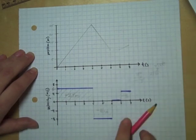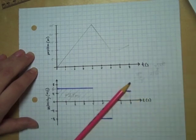So that's what you want to look for whenever you're doing a position versus time graph based on a velocity graph.